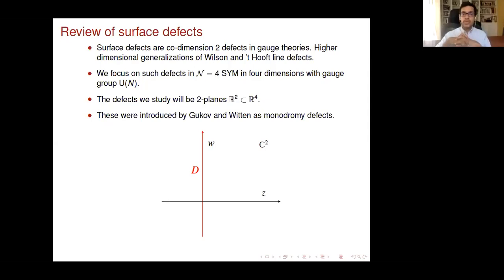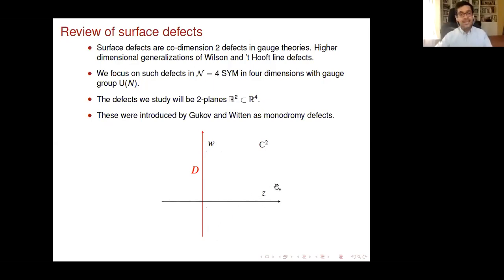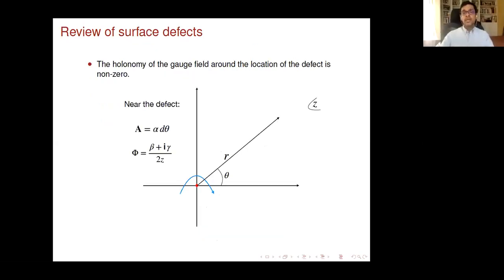We'll focus on surface defects in the most supersymmetric version of gauge theory, N=4, with gauge group U(N). The topology of the surface defect is just a two-plane in four-dimensional space — a complex line in this two-dimensional complex space. Gukov and Witten introduced these defects as monodromy defects. In whatever follows, I'll use z as the transverse coordinate to the defect.